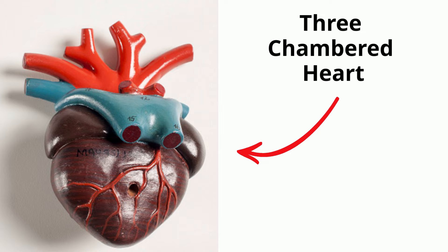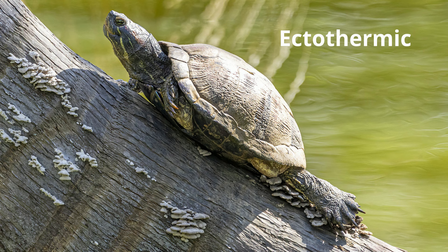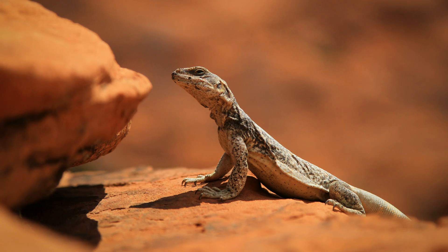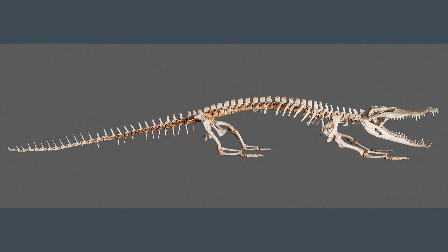Reptiles are ectothermic, or cold-blooded, and they have to use the surrounding environment to warm and cool themselves. Also, reptiles are vertebrates, meaning they have a vertebrae column that protects the spinal cord.